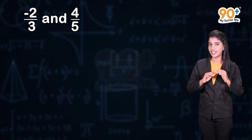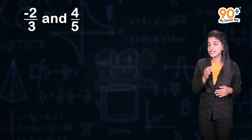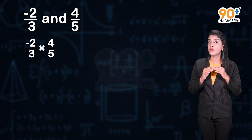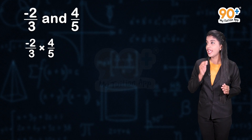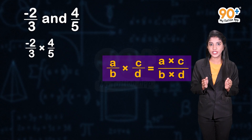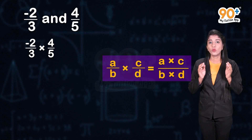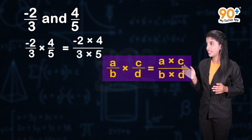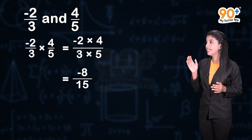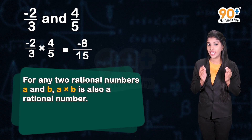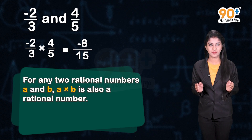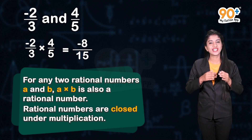Next, let us take two more rational numbers: minus 2 divided by 3 and 4 divided by 5. Can you tell me what is minus 2 divided by 3 into 4 divided by 5? We know that if a by b and c by d are two rational numbers, then a by b into c by d equals a into c divided by b into d. So here we get minus 2 into 4 divided by 3 into 5, which equals minus 8 divided by 15, which is a rational number. Thus, rational numbers are closed under multiplication.